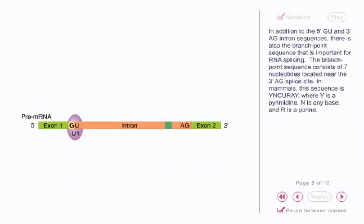In addition to the 5' GU and 3' AG intron sequence, there is also the branch point sequence that is important for RNA splicing. The branch point sequence consists of 7 nucleotides located near the 3' AG splice site. In mammals, this sequence is YN-C-U-R-A-Y, where Y is a pyrimidine, N is any base, and R is a purine.